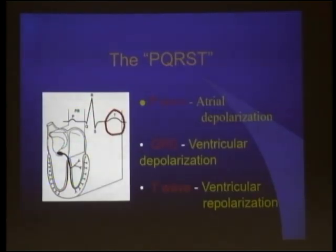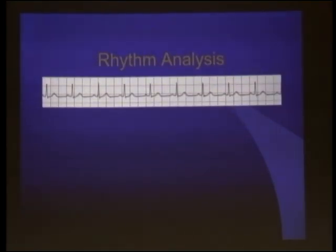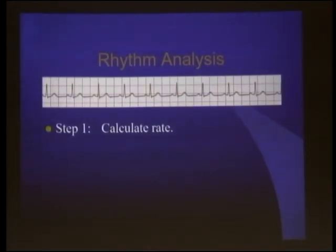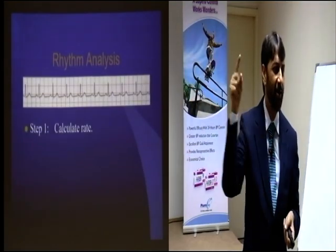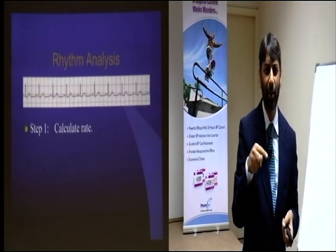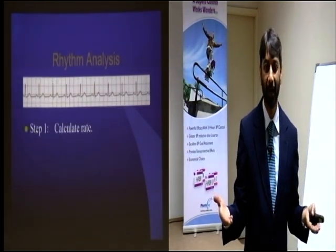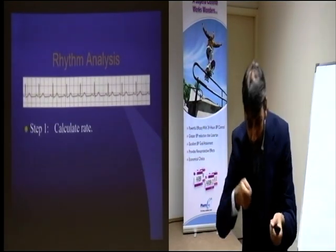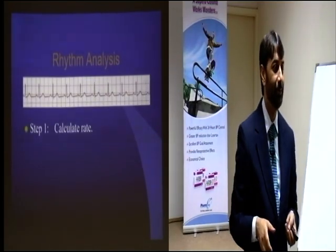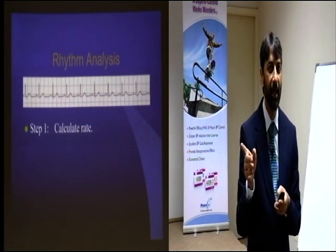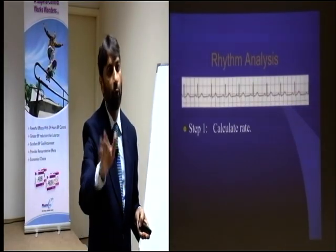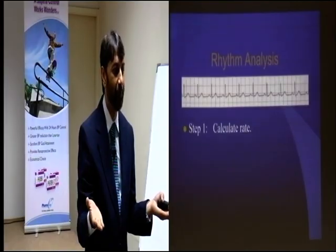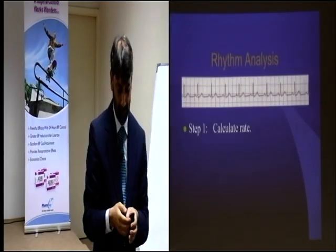I am quickly going through the principles of rhythm analysis. No matter what the rhythm looks like, the first step — leave everything aside, broad, narrow, regular, irregular, whatever — first calculate the rate. Compel yourself to do these things in these steps. Rate will tell you what to do with your patient: does your patient need immediate intervention? If the rate is 20, there is no time to go through ECG analysis — go to the patient. Similarly, if the rate is 180, go to the patient first.